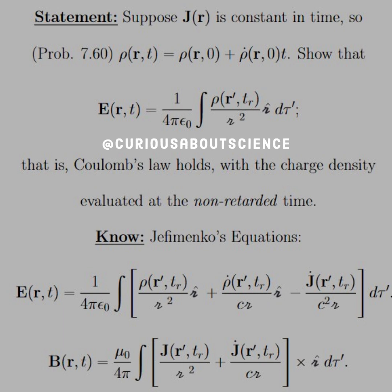Show that E of R of T is equal to 1 over 4 pi epsilon naught integral rho R prime T R over script R squared in the R-hat direction D tau prime. That is, Coulomb's law holds with charge densities evaluated at the non-retarded time. Okay.